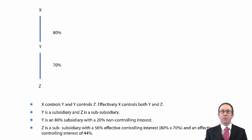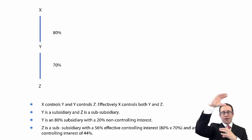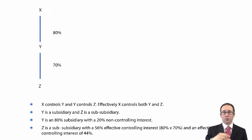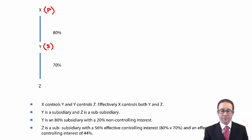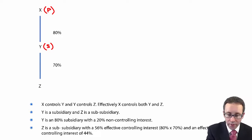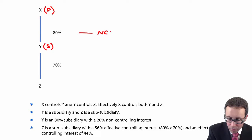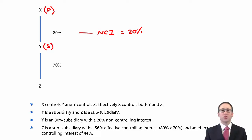Let's look at the first of our complex group structures: the vertical group structure. The first thing is calculating the percentage ownerships. In the vertical group structure, X is at the top as the parent, Y is underneath as the subsidiary — X controls Y, so the non-controlling interest in Y is 20%. You would just consolidate that subsidiary as normal.